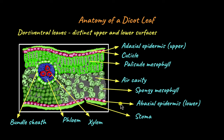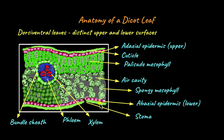Why is this so? We know that apart from gas exchange, stomata are also the site where water loss through transpiration occurs, and the upper surface of the leaf is exposed more to sunlight and to the environment compared to the lower surface. So to prevent water loss through transpiration, stomata are found only on the lower surface. The adaxial surface lacks stomata or has only very few.